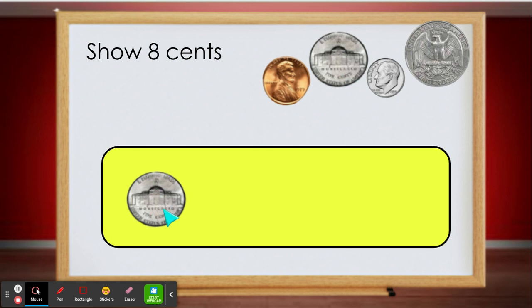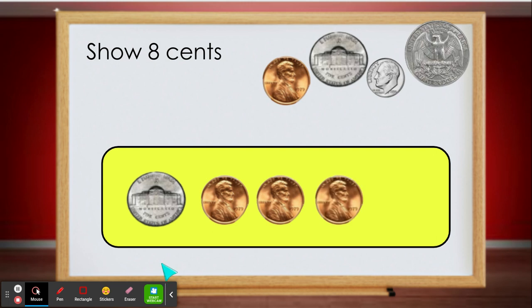If I have a nickel of 5 cents, how many more would I need to add to get to 8 cents? That's right, I'm going to use pennies this time. 6, 7, 8. So a nickel and 3 pennies equals 8 cents.